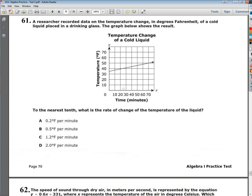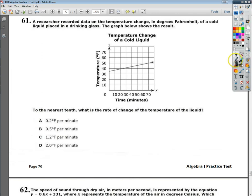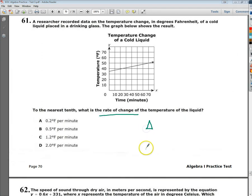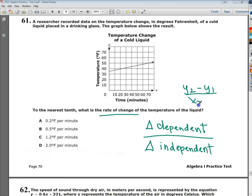What I'm going to do to figure this problem out, since I want to know a rate of change, and a rate of change is the change in my dependent variable over my change in the independent variable. In slope terms, we refer to this as the change in y over the change in x or rise over run.